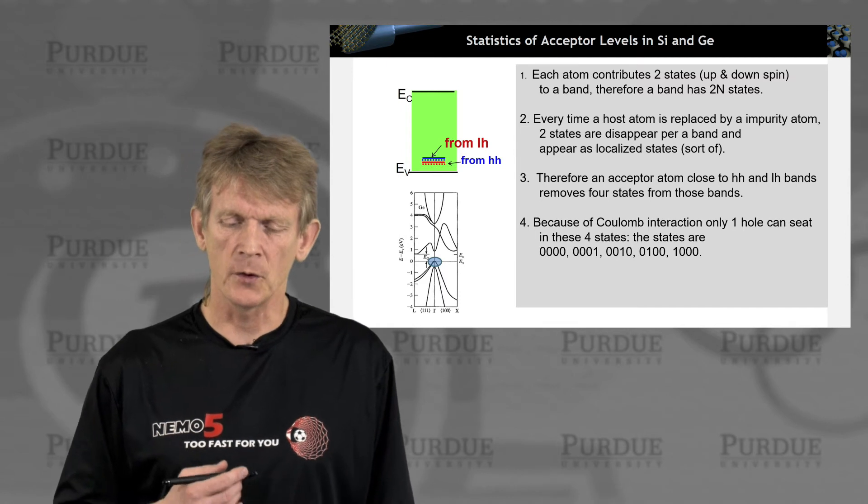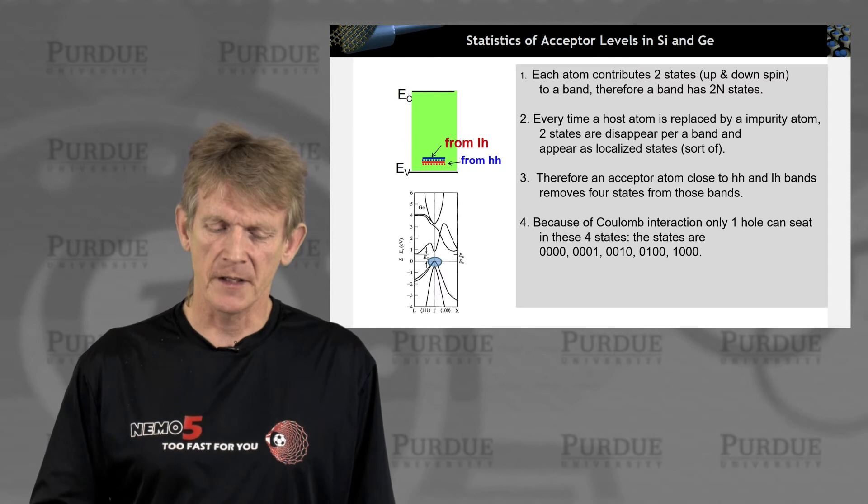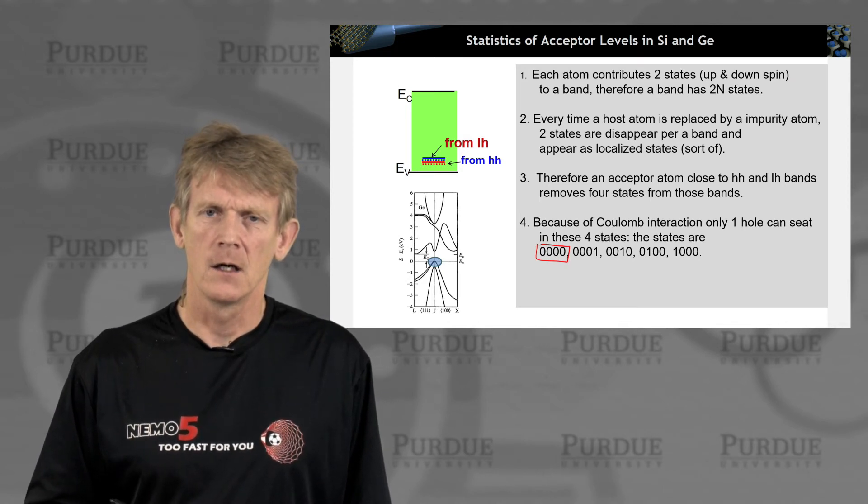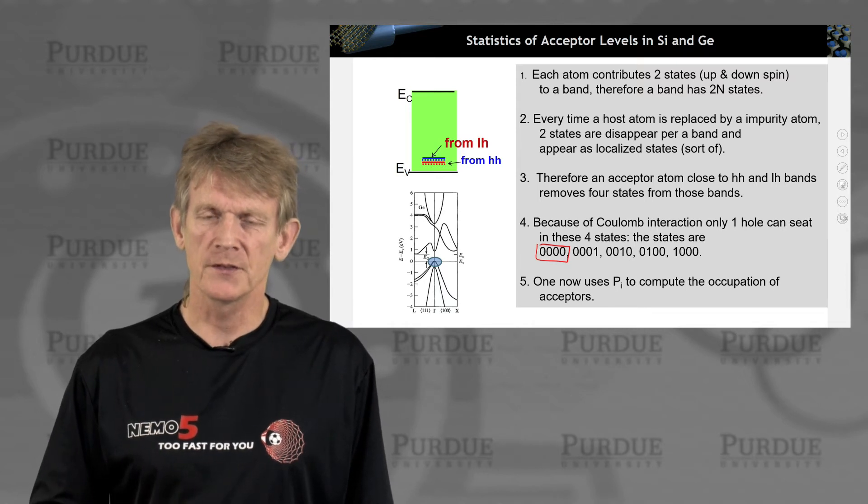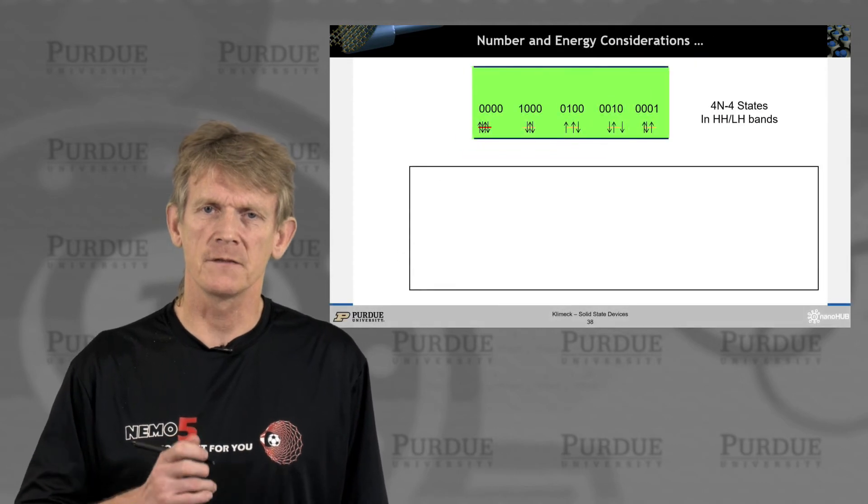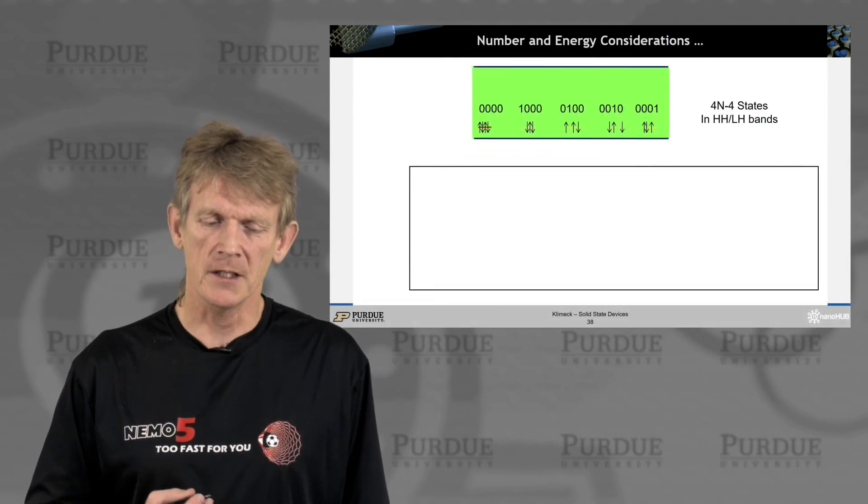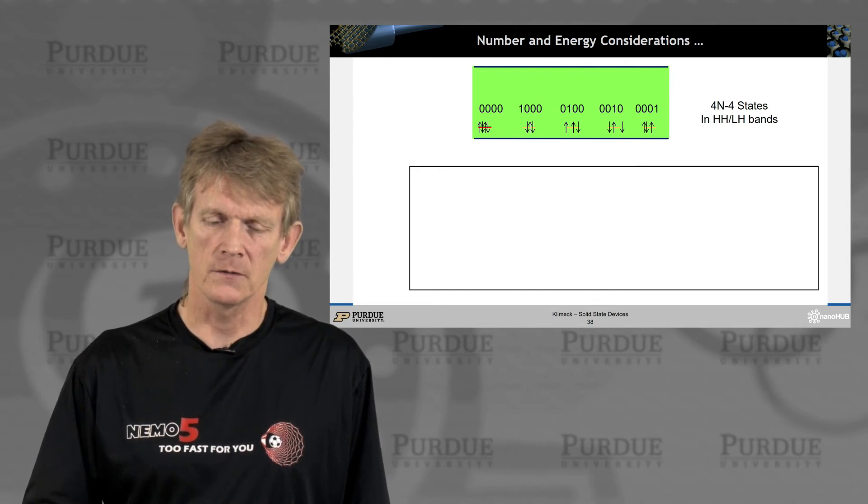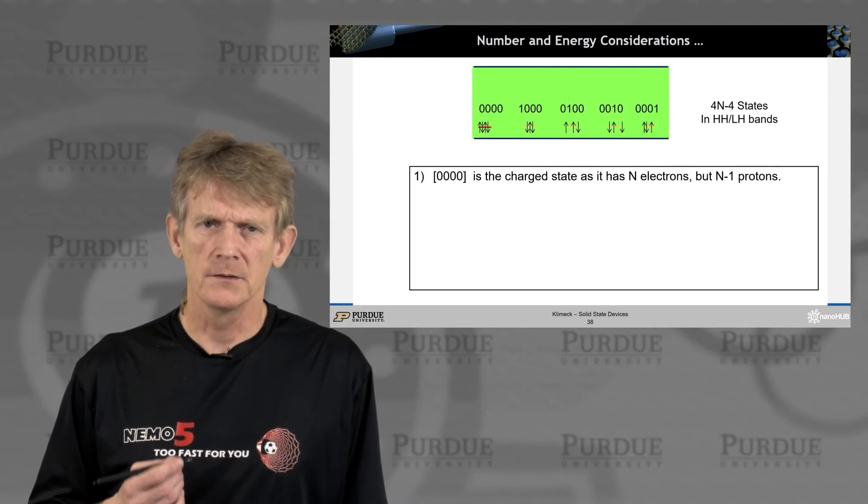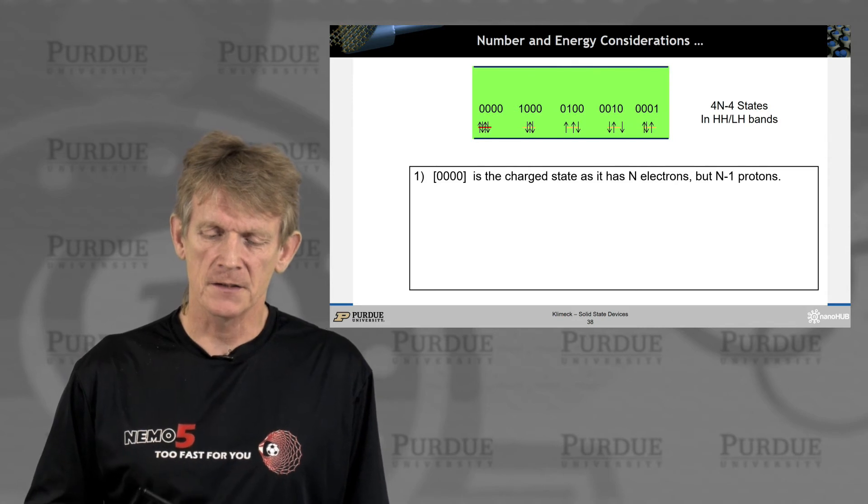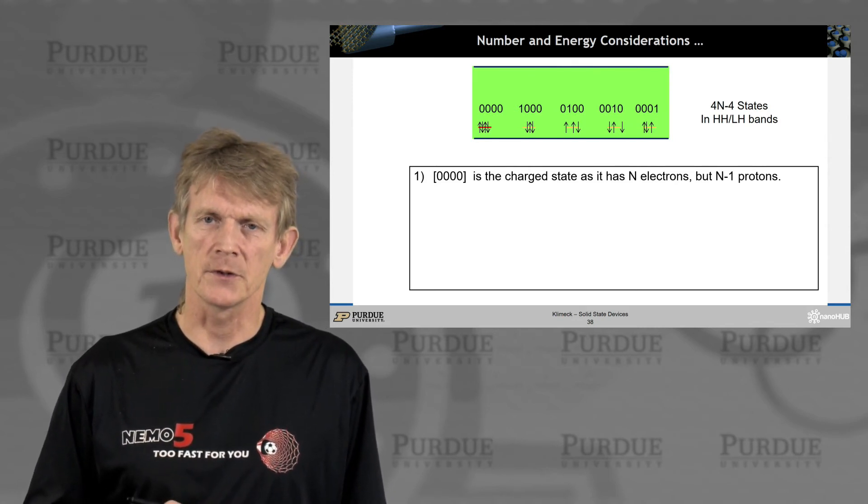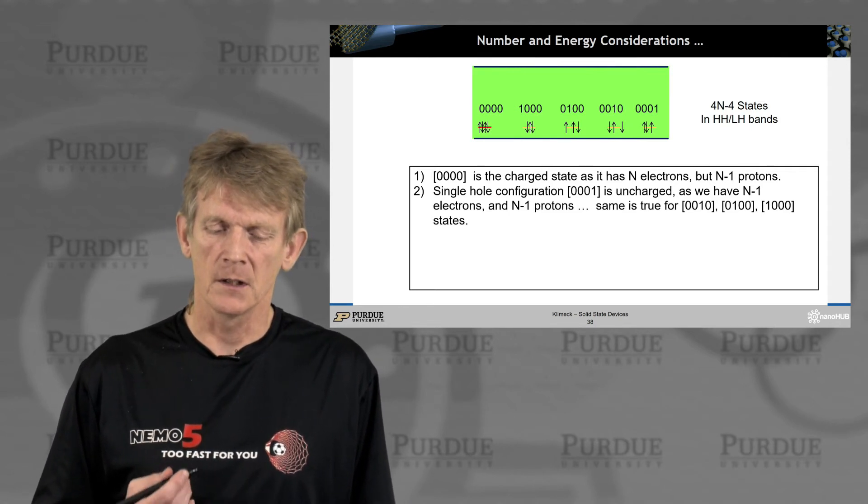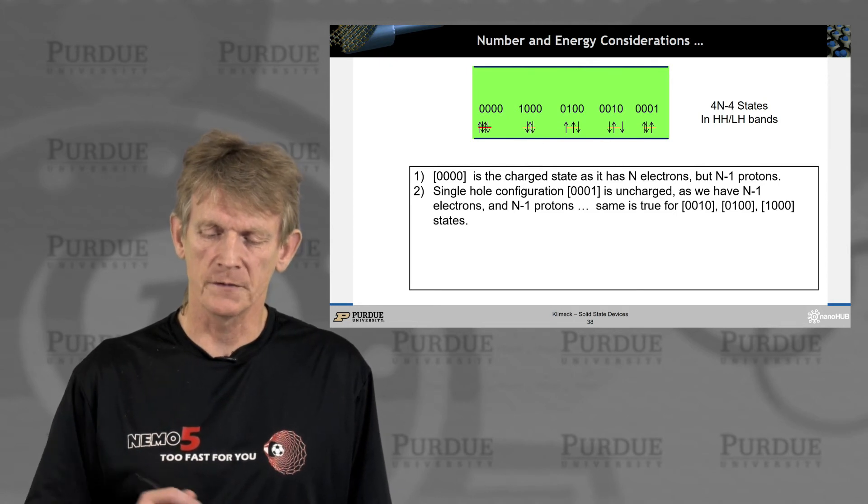So an acceptor atom close to the heavy and light hole bands removes four states from these bands. And now we need to configure these four states and populate them with a single electron. So what's available is really the triple zero state and then four configurations where we include a single hole in the configuration. We'll have to do the same calculation of probabilities of occupation, again with a partition function, and we can carry that through. So there's five configurations, no hole at all, and the light hole and the heavy hole configurations. The zero, zero, zero configuration means that there's a charged state that has n electrons and n minus 1 protons. If you have a single hole on there, then that means that we have n minus 1 electrons and n minus 1 protons. So that's true for any of these four configurations as laid out here.